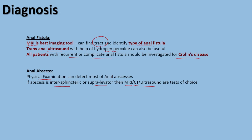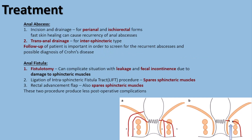For treatment of anal abscess, in perianal and ischiorectal forms, simple incision and drainage is sufficient. Note that fast skin healing can cause recurrence of anal abscess. For inter-sphincteric or supra-levator abscess, trans-anal drainage is the treatment of choice. Follow-up of these patients is very important to screen for recurrent abscesses, and in case of recurrence, a workup for Crohn's disease must be performed.